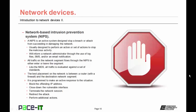Then there's the network-based intrusion prevention system, or NIPS. A NIPS is an active system designed to stop a breach or an attack from succeeding in damaging the network. They're usually designed to perform an action or set of actions to stop the malicious activity. Just like the NIDS, the NIPS will inform a network administrator through the use of log files, text messages, voicemail, and/or email notifications.